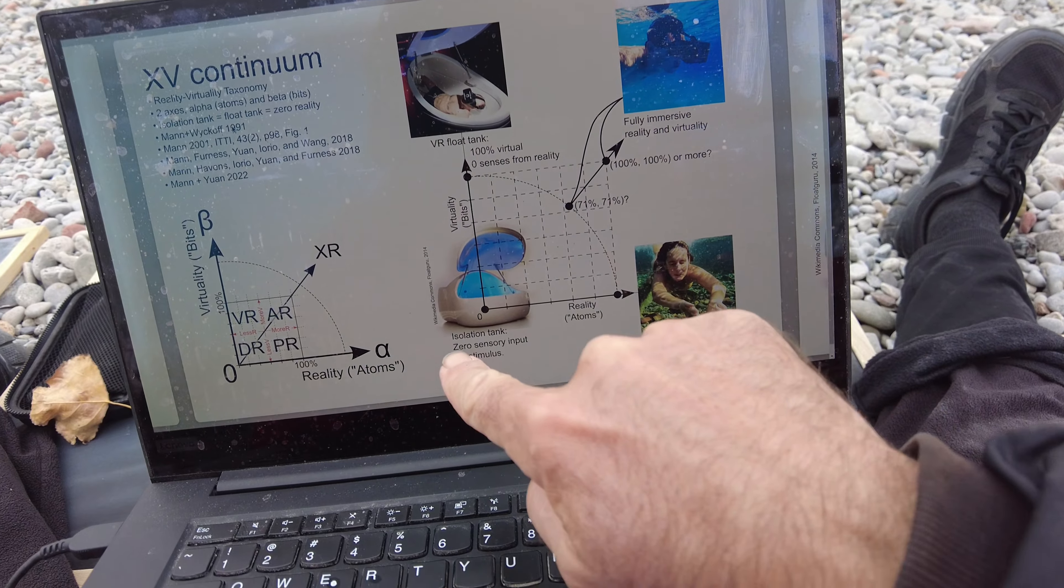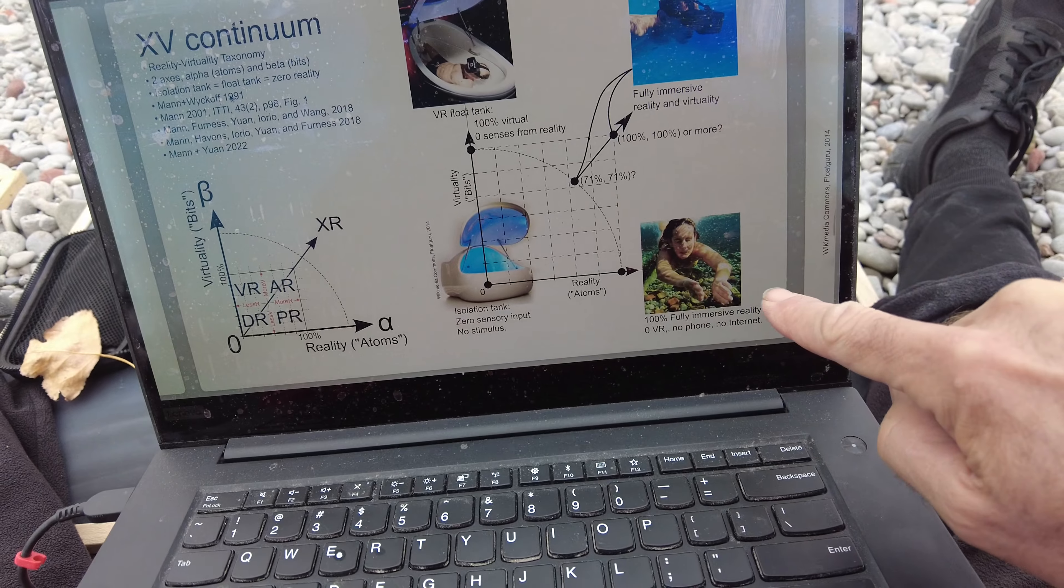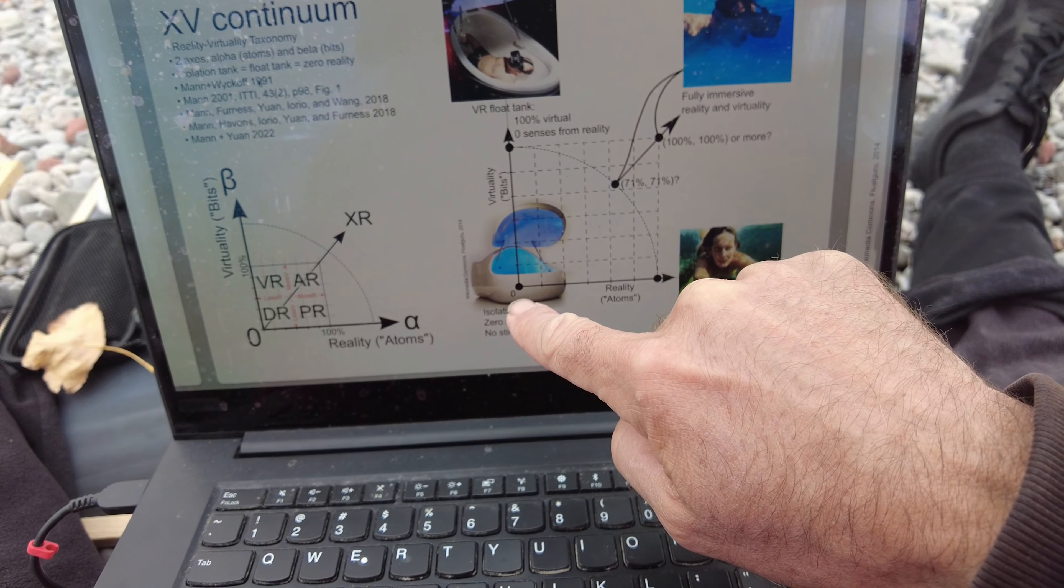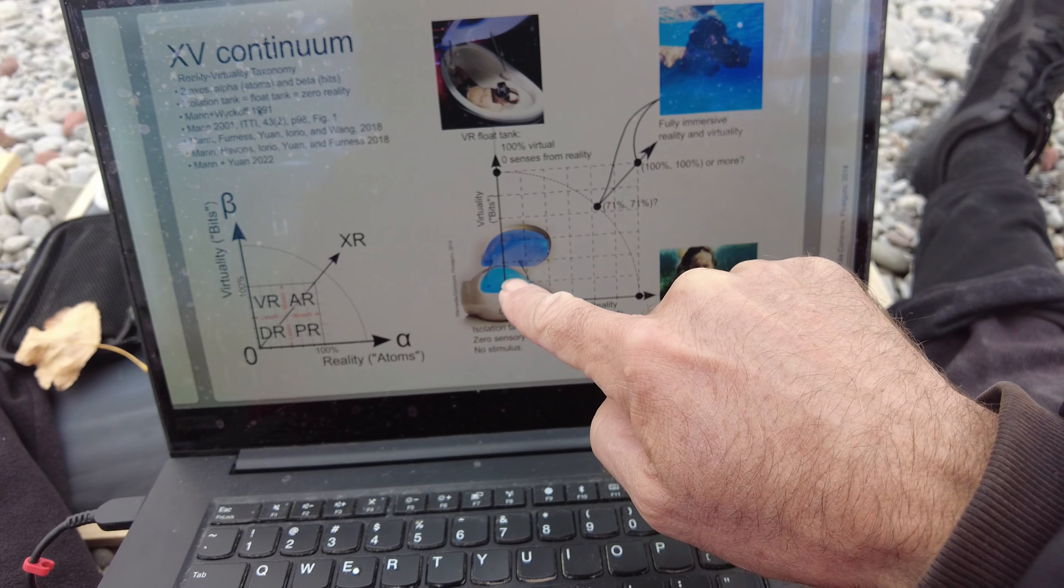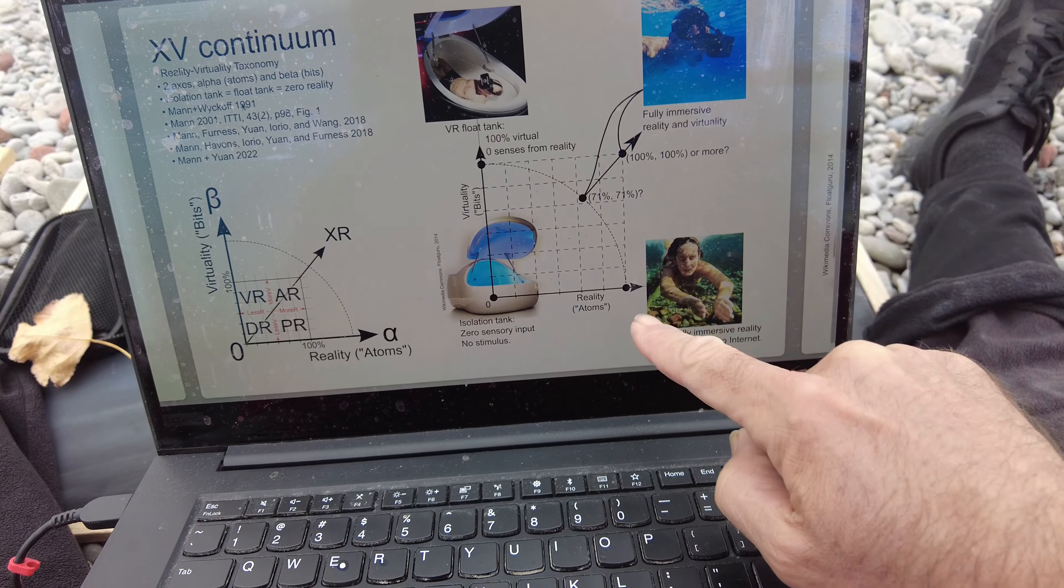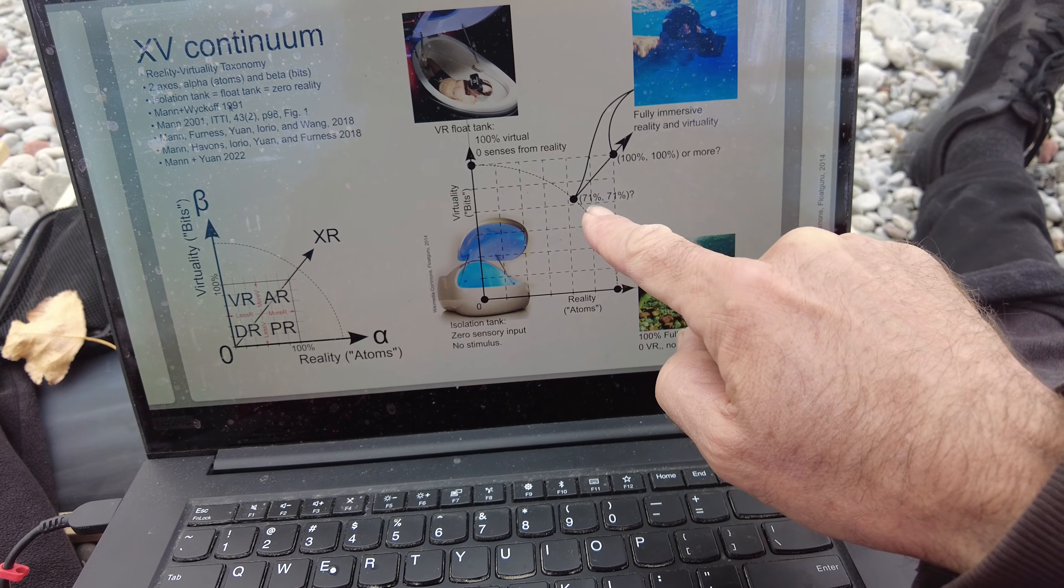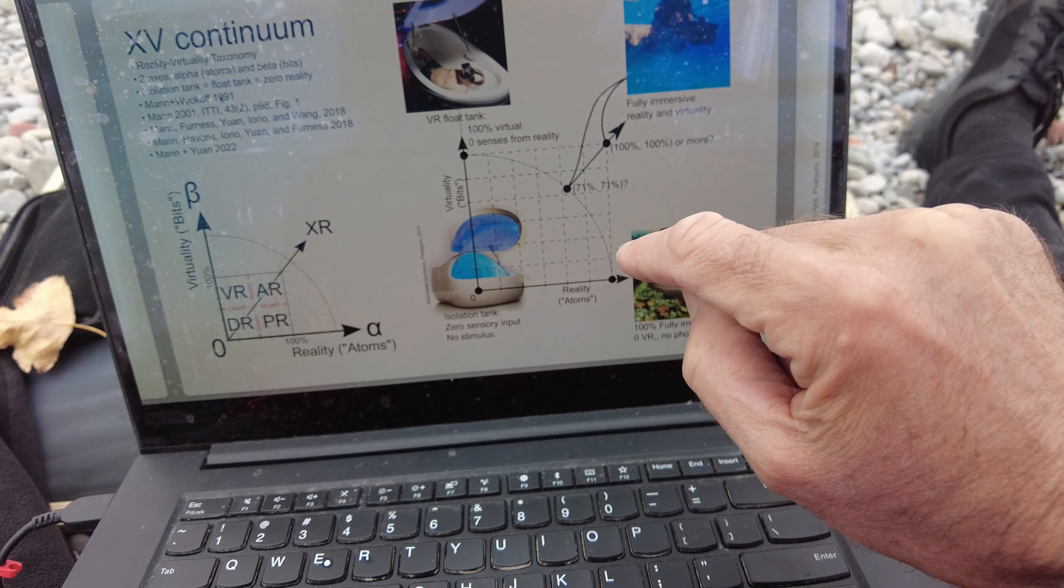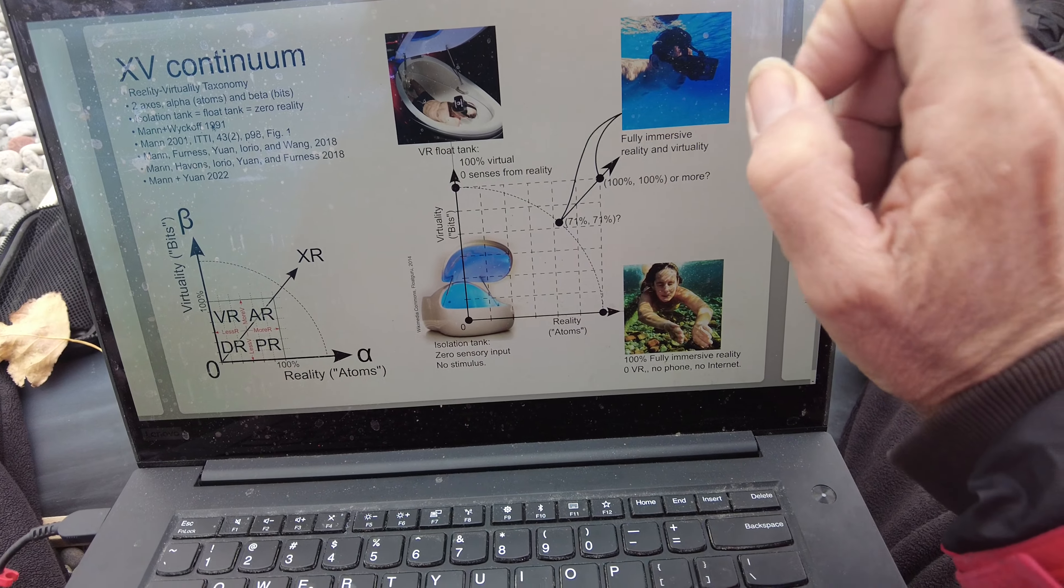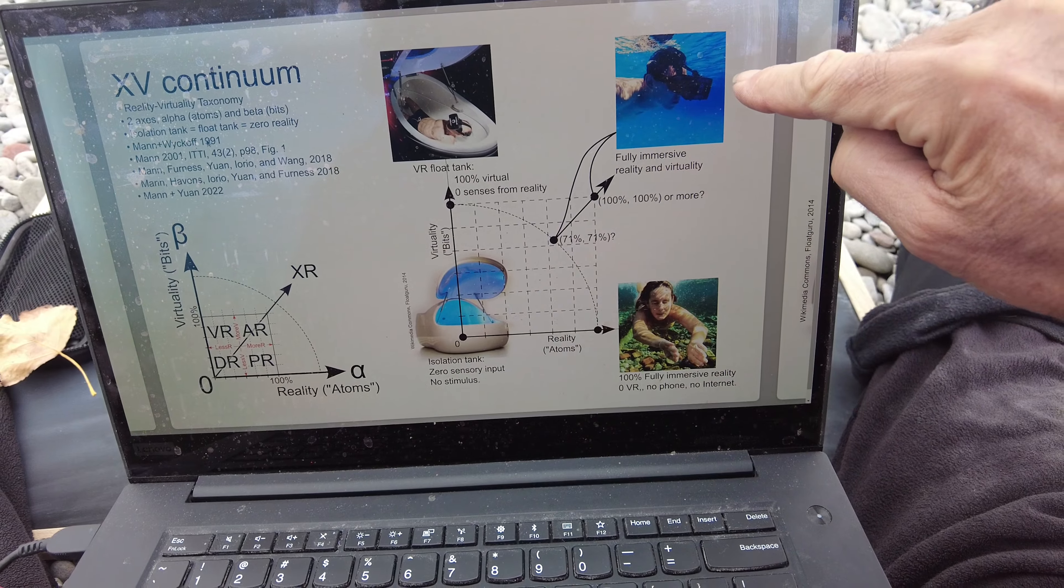XR allows us to go beyond the hundred percent point. That's at least its goal. So whereas here we have reality, physical reality on the alpha axis and virtual reality on the beta axis, 100 percent alpha, 100 percent beta. And if we put on a VR headset, you could argue that maybe it's 70.7 percent of each, like kind of an equal length vector square root of two.